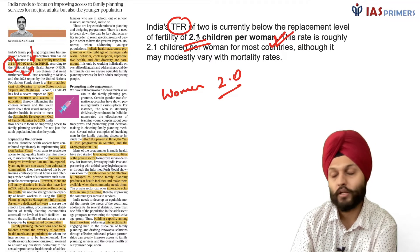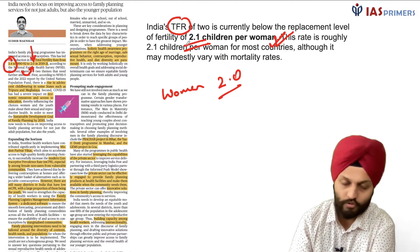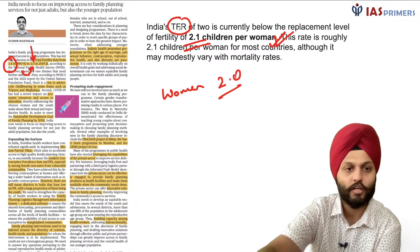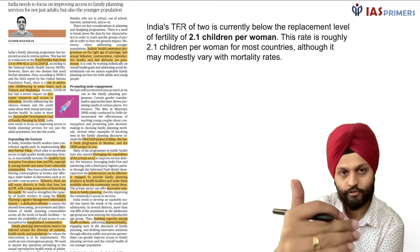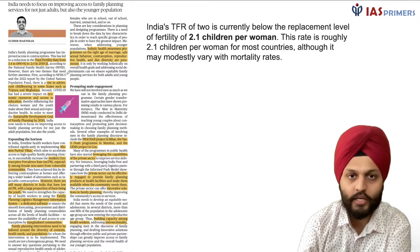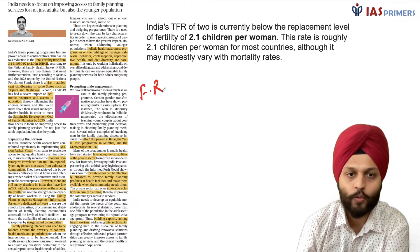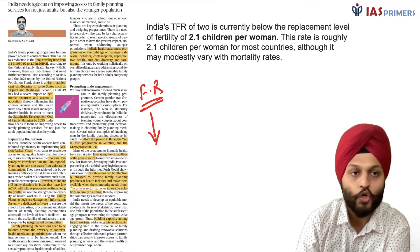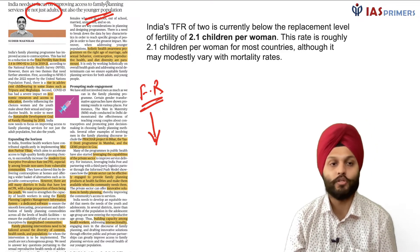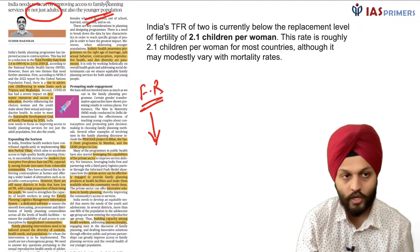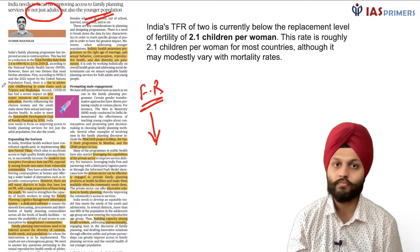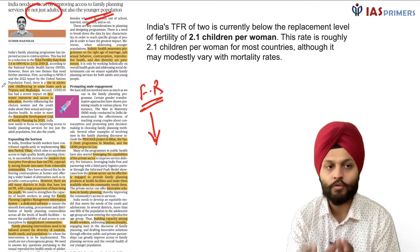Religion-wise also, all communities are more or less close to each other on fertility rates — so those giving bad names based on religion are not correct if you look at the data. The article says we have done great work on fertility rate, but we need to focus not just on adults and married couples but also on the younger population. As seen in Tripura and Meghalaya, there is a rise in adolescent childbearing that needs to be addressed.